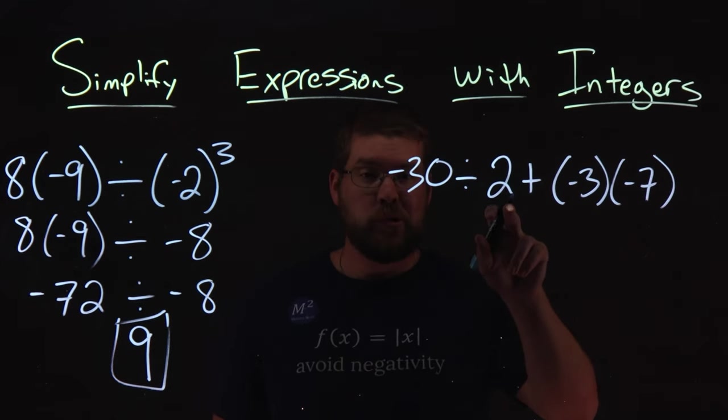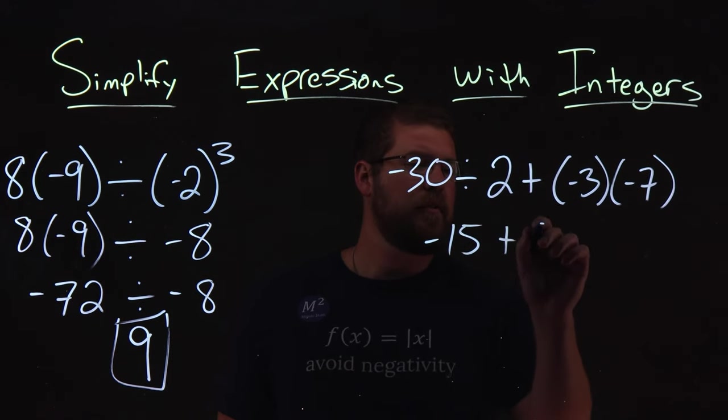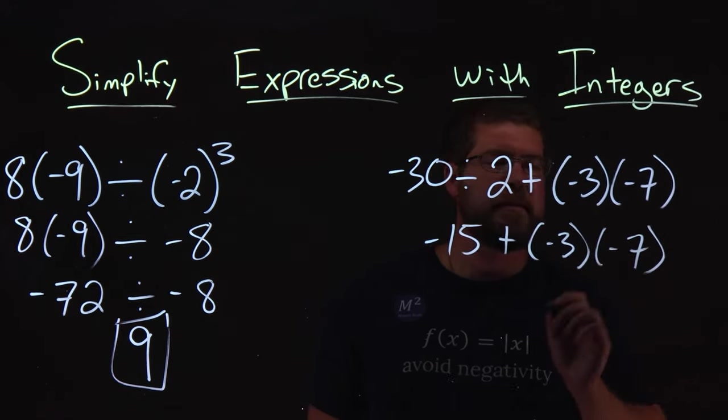Negative 30 divided by two, negative 15, plus a negative three times a negative seven.